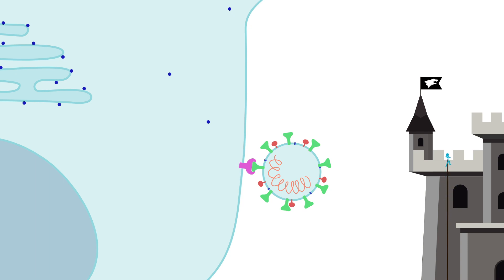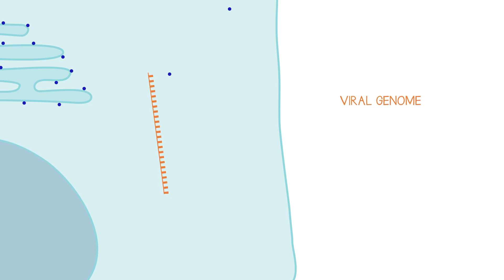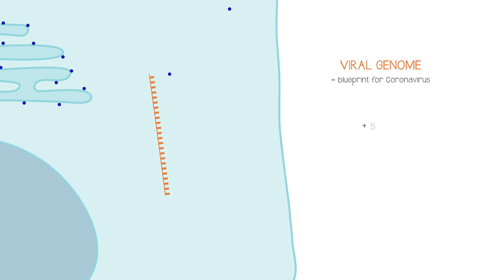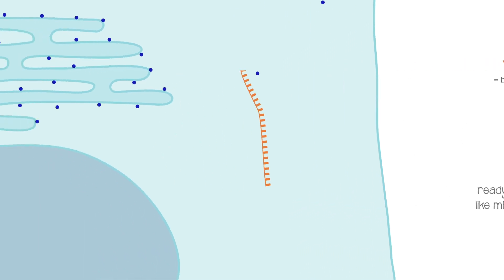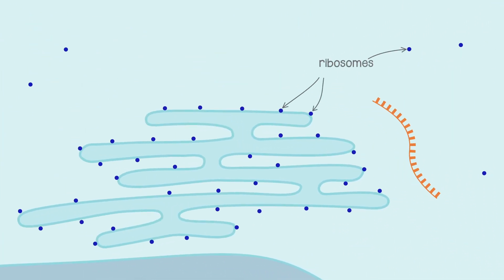Once attached, the coronavirus fuses its membrane with the cell's membrane and disgorges its RNA into the pneumocyte. As we mentioned before, this is the coronavirus's genome encoding the blueprint for how to make a coronavirus. The coronavirus is a positive-sense single-strand RNA virus. This just means that its genes are in a ready-to-translate format, the same format that human genomes use to send instructions to ribosomes, which are the cell's protein factories. So the virus is able to use the human's own resources to make further copies of itself.